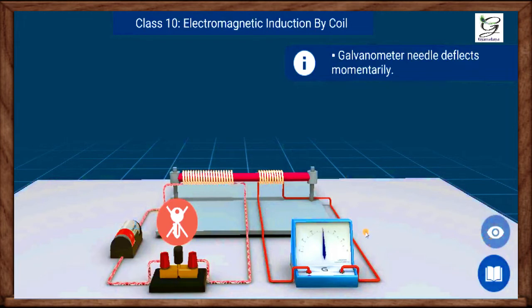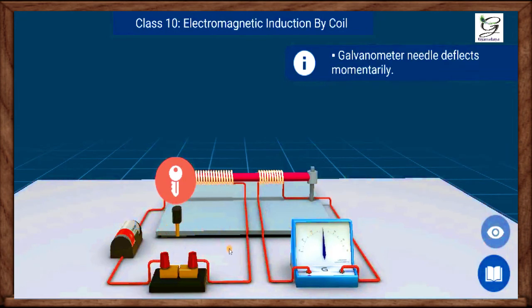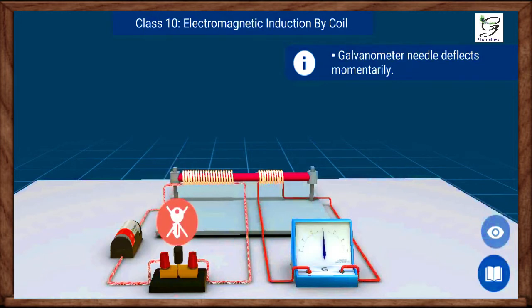Disconnect the plug key and observe. We can see that the needle of galvanometer deflected again momentarily but to the opposite side. As we change the supply voltage there is a momentary deflection in the second coil.